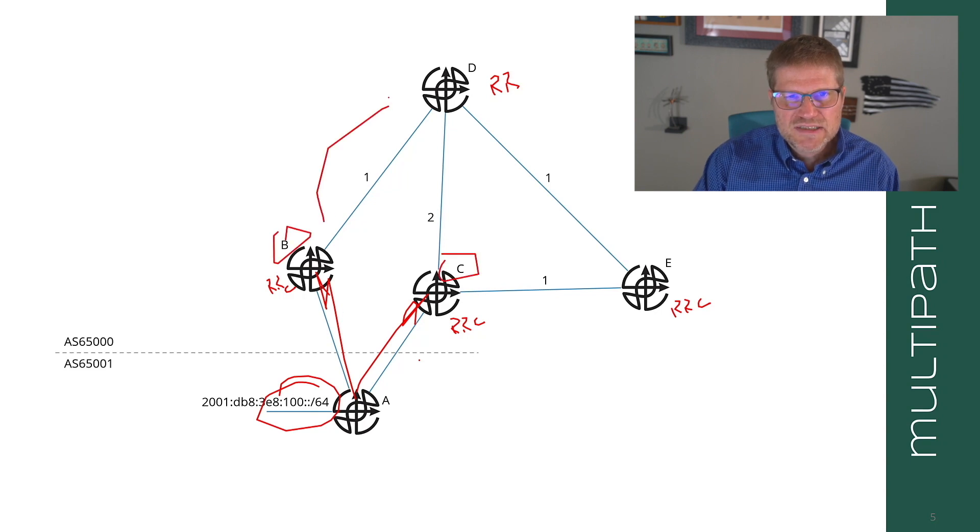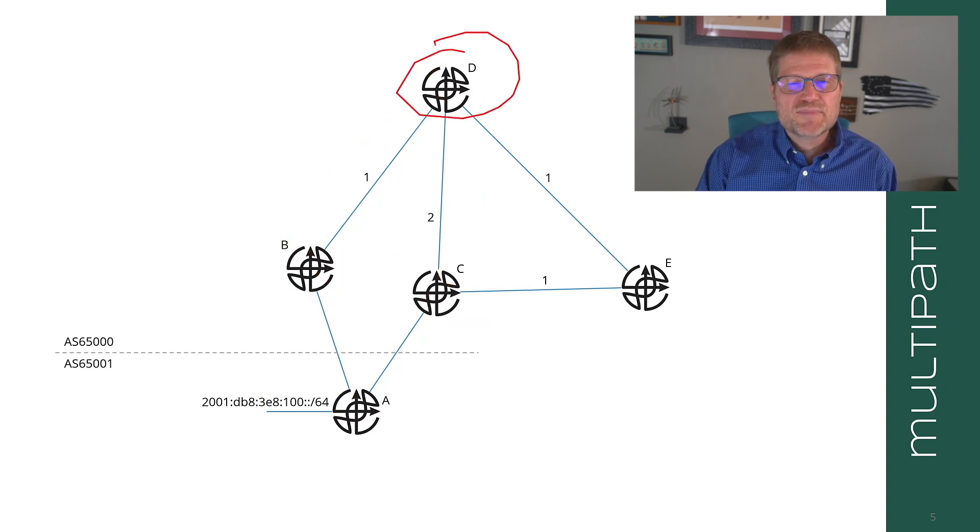So therefore when B and C advertise the route up to D, the route reflector receives two routes, one with the next hop of C, one with the next hop of B. So now what is the route reflector going to do? The route reflector is going to run best path, and it's going to see the path to B is one, the path through C is two.